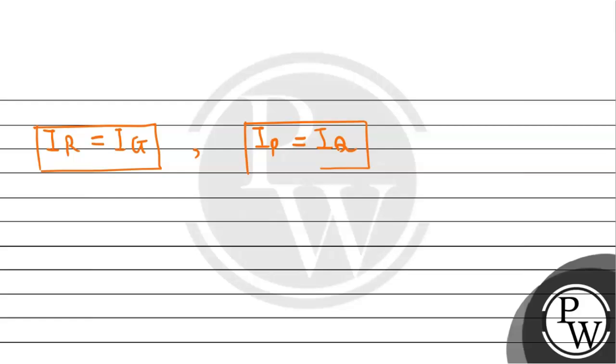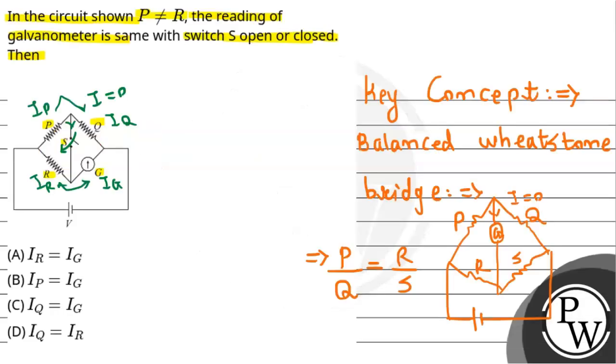Whether the switch is open or closed, we get IR equals IG and IP equals IQ. So IR equals IG, which means option A is correct. The other options are not correct, so only option A is the correct answer.